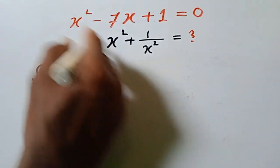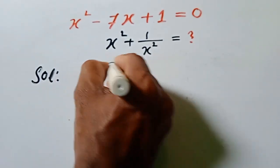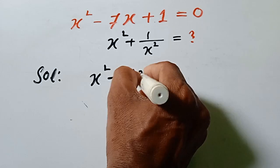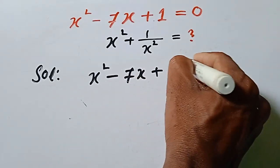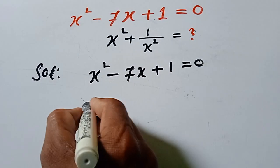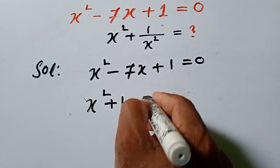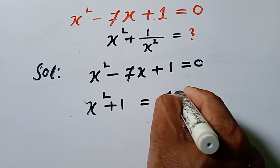Solution. At first, x square minus 7x plus 1 is equal to 0. Here x square plus 1 is equal to 7x.